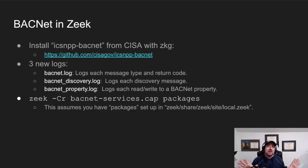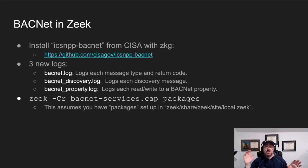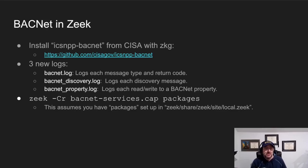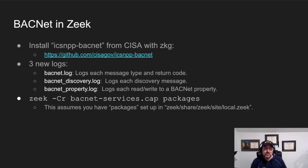Now we're going to talk about what BACnet looks like from a Zeek standpoint. In order to analyze BACnet in Zeek, you want to install the CISA Zeek package — I put the link for you there. It's usually the first link on Google when you type 'CISA Zeek BACnet,' and it goes to that GitHub account. When you install this, there are three new logs, and I use them to varying degrees depending on what I'm doing.